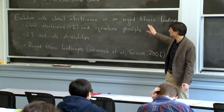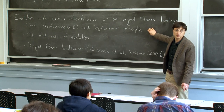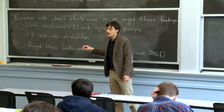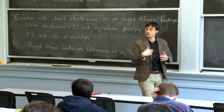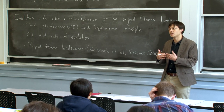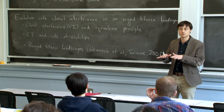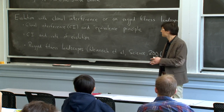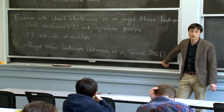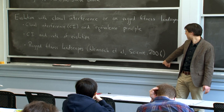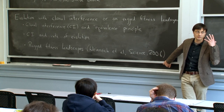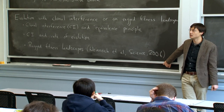We'll complete our discussion of Roy Coshone's paper on the equivalence principle in the presence of clonal interference. Then we'll say something about how clonal interference slows down the rate of evolution — it slows down the rate at which the population can increase in fitness because of competition between different beneficial lineages. Then we'll discuss this paper by Daniel Weinreich, which had a real important effect in terms of getting us to think about evolution in a different way.